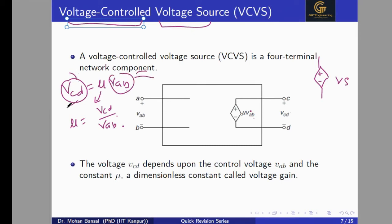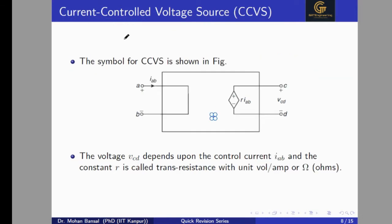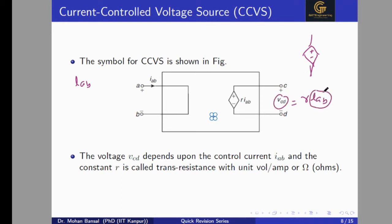For the Current Controlled Voltage Source: the source is a voltage source (polarity inside the diamond), but its value depends on some current. The input current Iab flows across terminals a and b, and the output voltage Vcd = r·Iab. Here r is called trans-resistance, defined as the ratio of output voltage Vcd to input current Iab. This is called the Current Controlled Voltage Source.